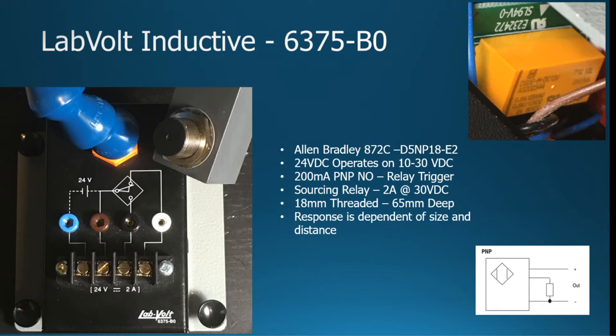The actual sensor can handle up to 200 milliamps of load. It's a PNP, normally open, but it will be used to trigger the relay there. The relay or sourcing relay can handle up to 2 amps at 30 volts DC.